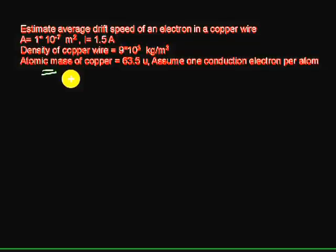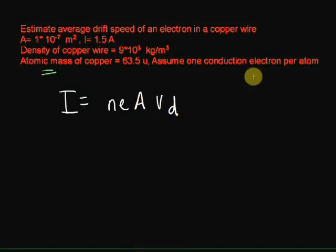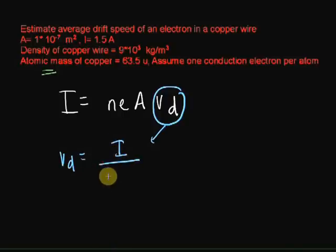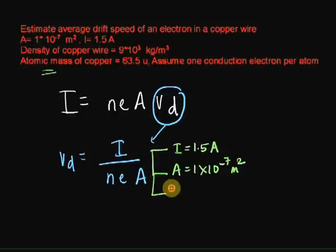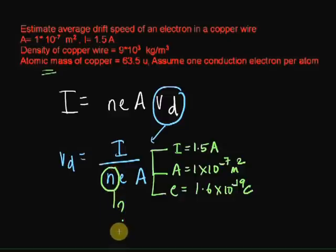So how do I calculate my drift? We know the relationship between current and drift. I is equal to N times E times A times VD. So my drift is given by I over N times E times A. What are the values we already know here? We know the current I, which is 1.5 amps. We know the area of cross section, which is given by 1 into 10 to the power minus 7 meter square. And we also know E, which is the charge of an electron, 1.6 into 10 to the power minus 19 coulombs. So the only thing left to calculate is N, which is the number of charge carriers per unit volume.